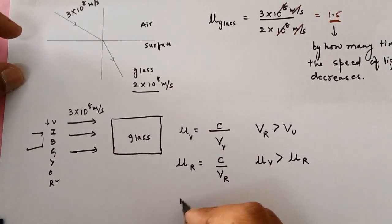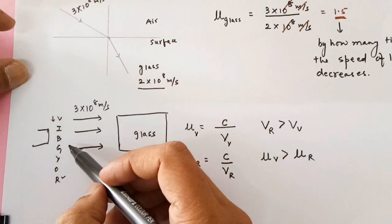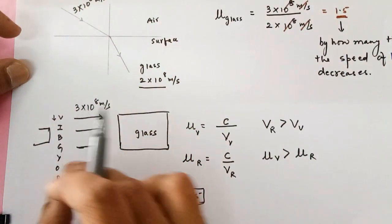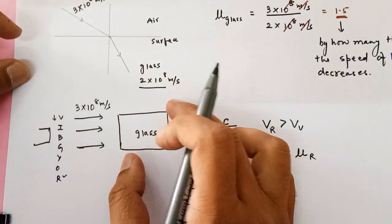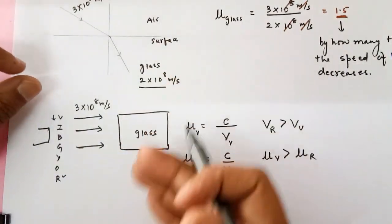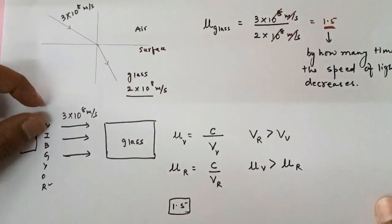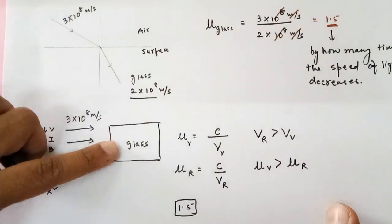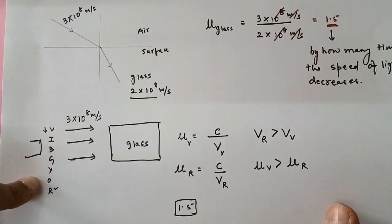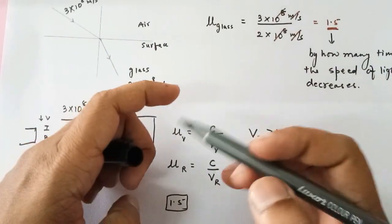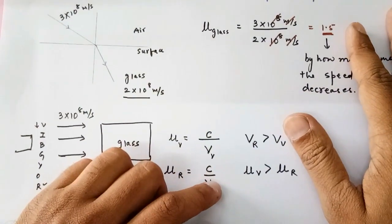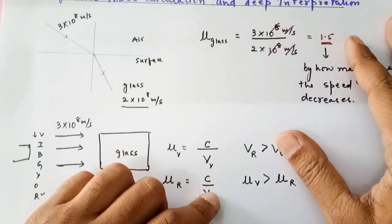So we actually have seven different refractive indexes for glass. We say the refractive index of glass is 1.5 by considering approximately the middle color — green or yellow — to give a standard refractive index for the medium, otherwise there would be a lot of confusion. Remember: the refractive index of any medium is not constant — it depends on which color of light you are using. Hopefully you liked my explanation; if you have any doubts please comment, and subscribe to my channel. Thank you for watching.